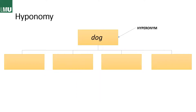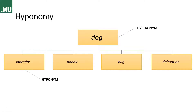A totally different type of semantic relation is hyponymy. In hyponymy we have a hierarchical structure: a general term at the top and more specific terms that belong to the group below. The generic term is called the hyperonym — in this case 'dog' — and then we have the hyponyms, which are the more specific terms: labrador, poodle, pug, dalmatian. Several hyponyms together can also be called heteronyms or co-hyponyms.